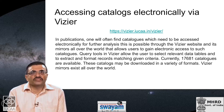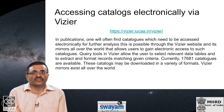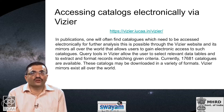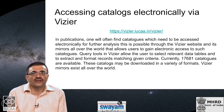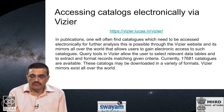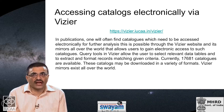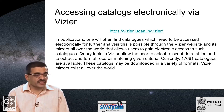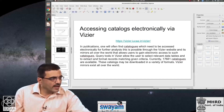Once you download and read research papers, you will often find in some papers a large catalog of a certain kind of object. To access these catalogs for further analysis, there is the Vizier website — mirrored all over the world — that allows users to gain electronic access to such catalogs. The query tools in Vizier allow the user to select relevant data tables and extract records matching given criteria. Currently more than 17,000 catalogs are available through Vizier, downloadable in a variety of formats.